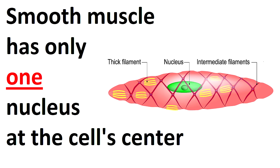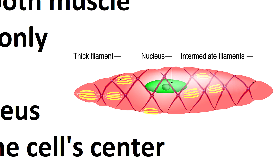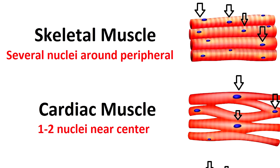One key difference with smooth muscle cells is that they are only going to have one nucleus, which is located in the central portion of the cell. In contrast, skeletal muscle tissue has multiple nuclei around the peripheral portion, whereas cardiac muscle usually has one or maybe two nuclei which are also centrally located.